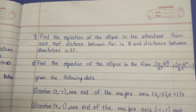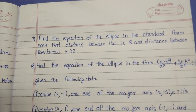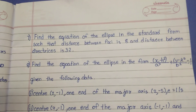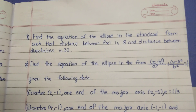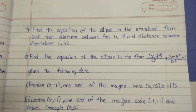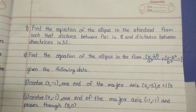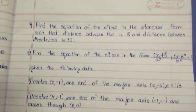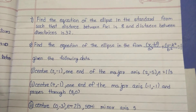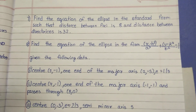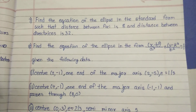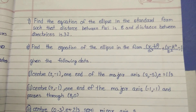Seventh one: find the equation of the ellipse in standard form such that distance between foci is 8 and distance between directrices. We find the equation using the relationship between foci and the ellipse parameters.